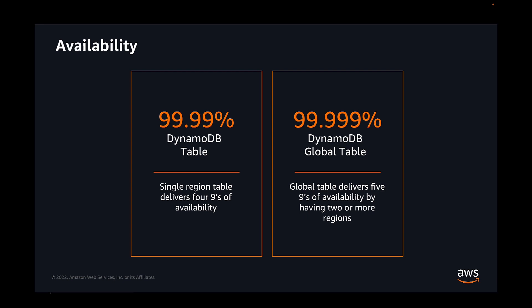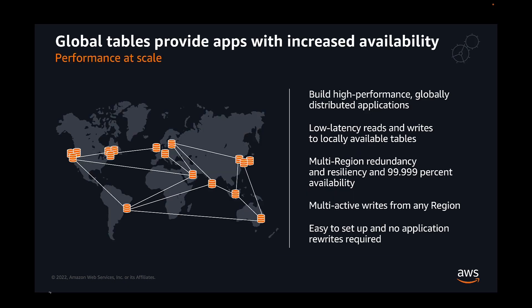As DynamoDB is a fully managed serverless service, high availability is built in by default. DynamoDB offers a service level agreement of four nines of availability for a single region, and five nines of availability for DynamoDB Global Tables, equating to less than five minutes of downtime per year. Global Tables build on DynamoDB's global footprint to provide a fully managed, multi-region, multi-mastered database that delivers fast, local read and write performance for massively scaled global applications. Global Tables replicate your DynamoDB tables automatically across your choice of AWS regions, eliminating the difficult work of replicating data between regions and resolving update conflicts.